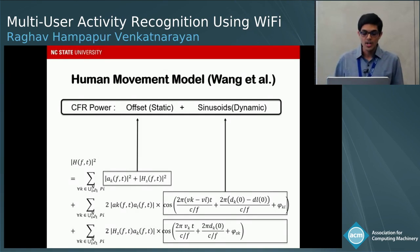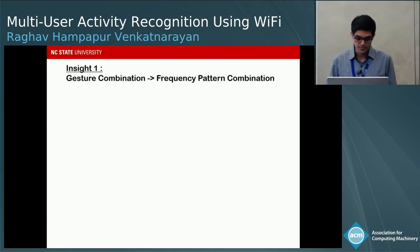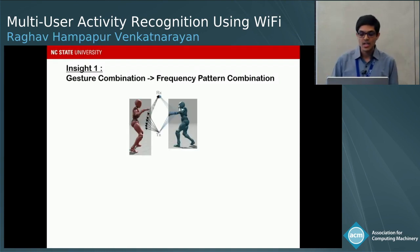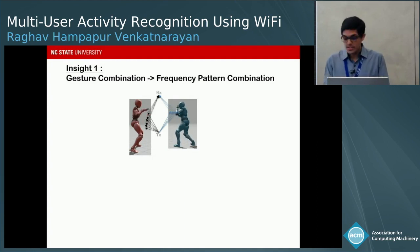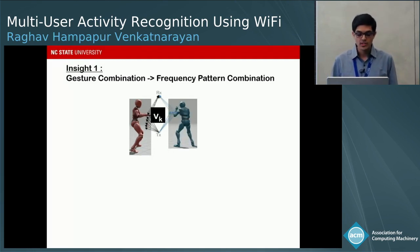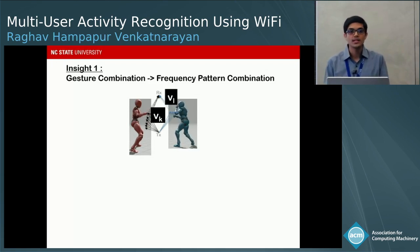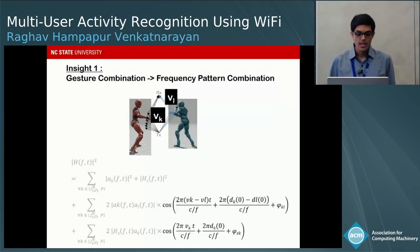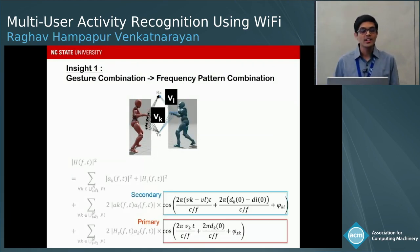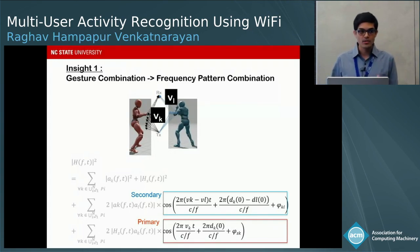We develop three insights from this model for multi-user gesture recognition. The first insight is that a given combination of gestures maps to a given combination of frequency patterns. For example, with two users whose reflected paths move at speeds Vk and Vl, we have one sinusoid each for Vk and Vl — called primary frequencies — and one sinusoid representing the relative speed between them, called secondary frequencies. Therefore, a certain combination of gestures yields a certain combination of primary and secondary frequencies.